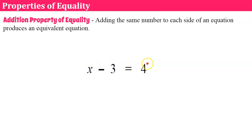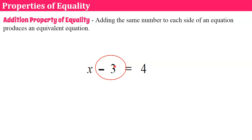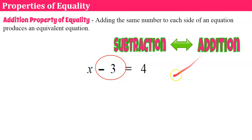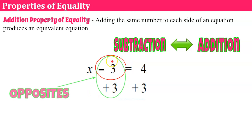Here we have the equation x subtract 3 is equal to 4. This is a statement of equality — an algebraic expression equal to a mathematical expression. We want to solve for x, so I need to identify what is happening to x. X is being subtracted by 3. The inverse operation of subtracting 3 is addition. So we're going to add 3 to both sides, keeping the balance. This becomes opposites, which form a zero pair equal to zero, leaving just x on the left side. And 4 plus 3 gives me 7.